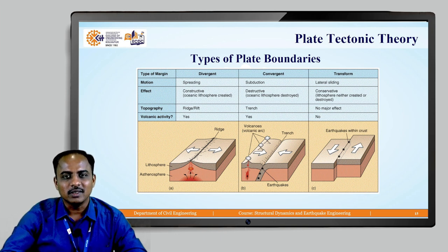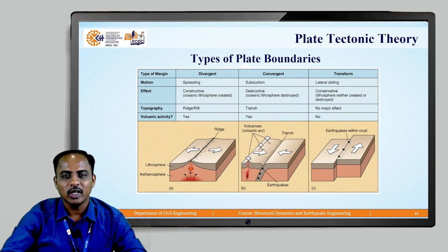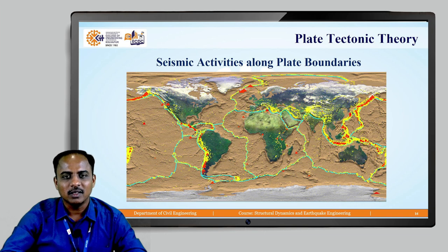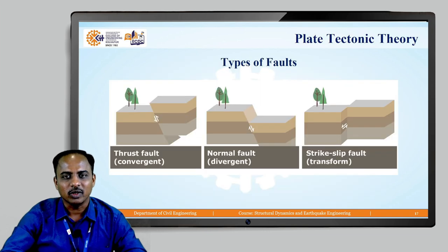The third type is a transform boundary — the plates move parallel to each other in a lateral sliding motion. It is a conservative boundary, meaning neither the lithosphere is created nor destroyed, so there is no major topographical effect and no volcanic activities. With these plate movements, we have three types of major faults: thrust fault at convergent boundaries, normal fault at divergent boundaries, and strike-slip fault at transform or parallel boundaries.